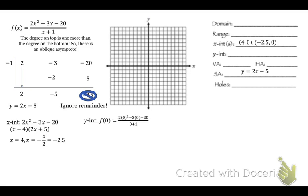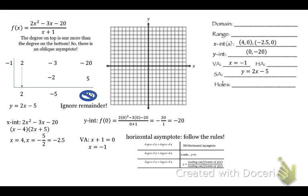Y-intercept: plug in 0, and you get negative 20 over 1, which is negative 20. So that's (0, negative 20). Vertical asymptote: set the bottom equal to 0 — x plus 1 equals 0, so x equals negative 1. Horizontal asymptote: the top degree is greater than the bottom, and we have a slant asymptote, so there is no horizontal asymptote. And there are no holes because nothing cancels.